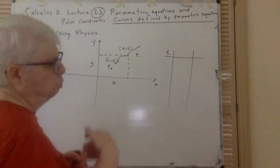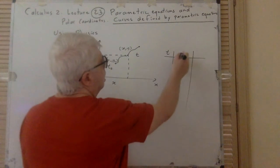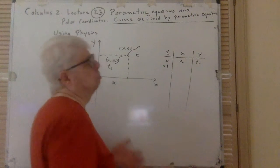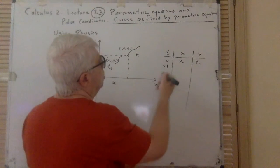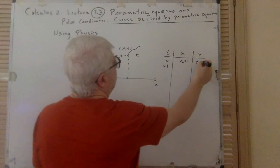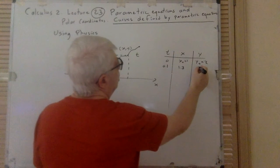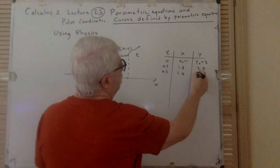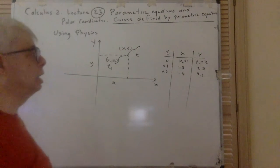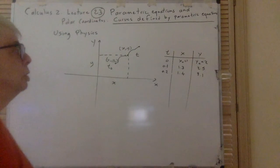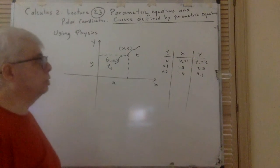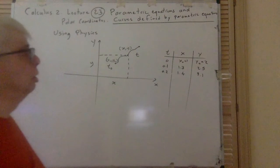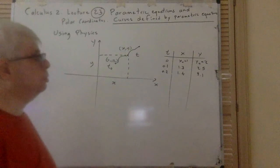At time zero the object is at (x₀, y₀). At time 0.1 second it might be at (1.3, 2.5), at time 2 it is at (1.4, 3.1), and so on. That's the meaning of X and Y depending on t. At any time t, if we measure the coordinates of the point, we get some numbers. So X and Y are functions of t — in this case, time.